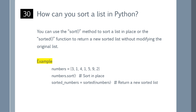How can you sort a list in Python? You can use the sort function to sort a list in place, or the sorted function to return a new sorted list without modifying the original list. You can refer to the example shown on the screen.